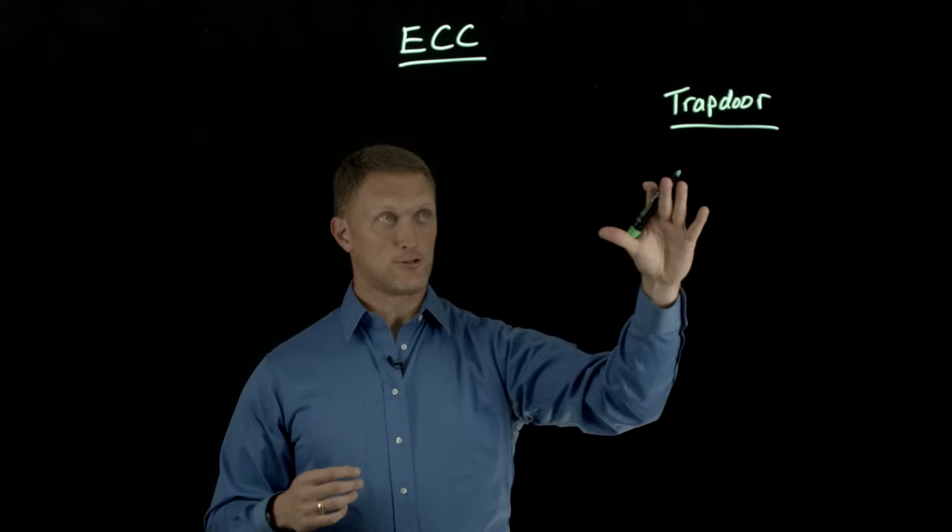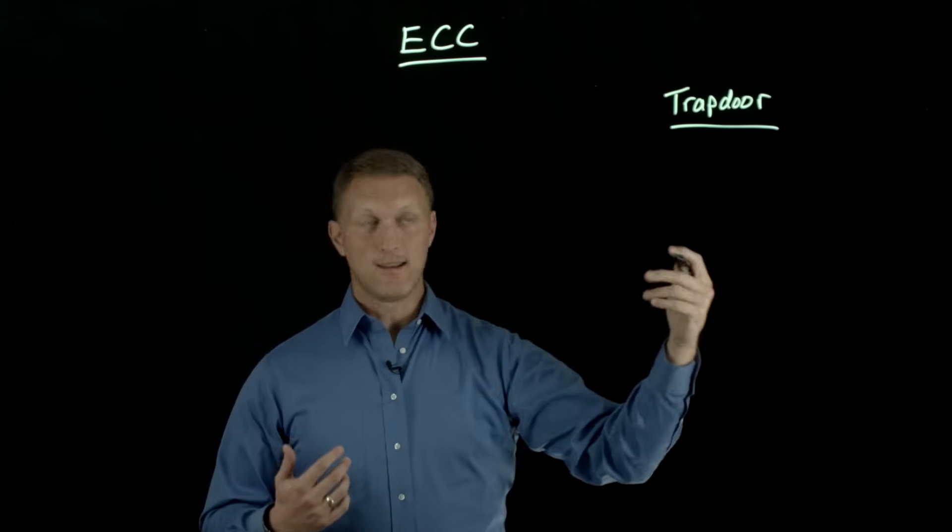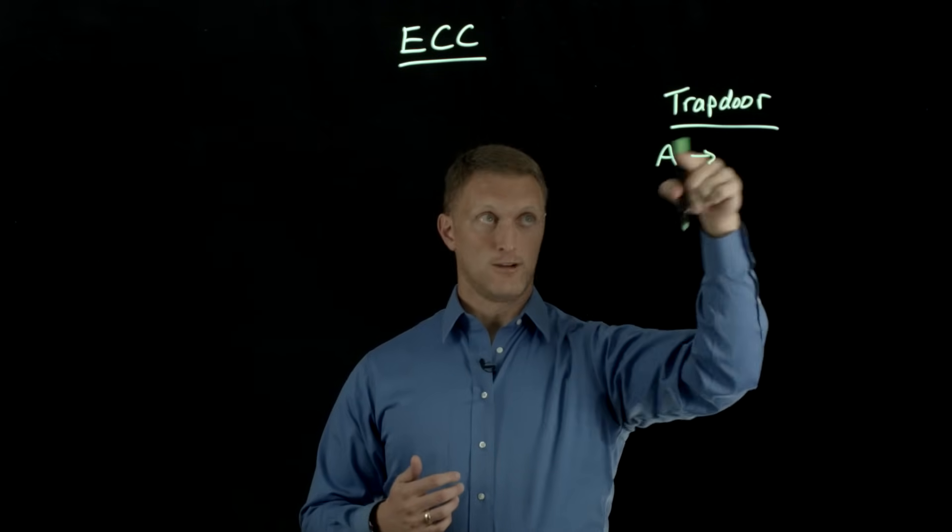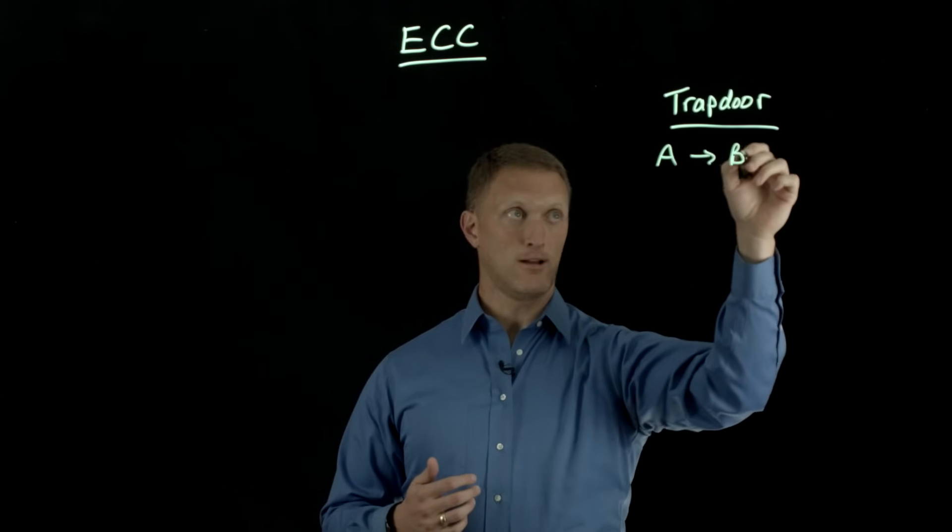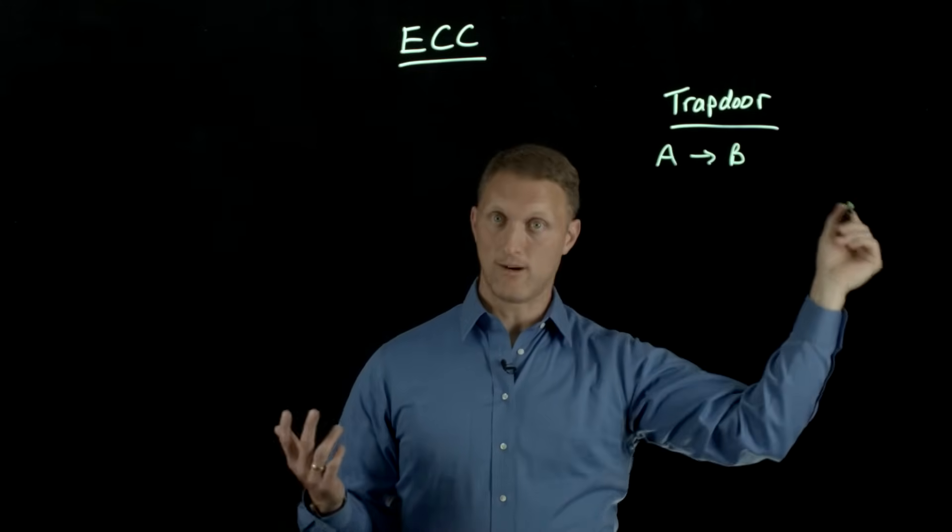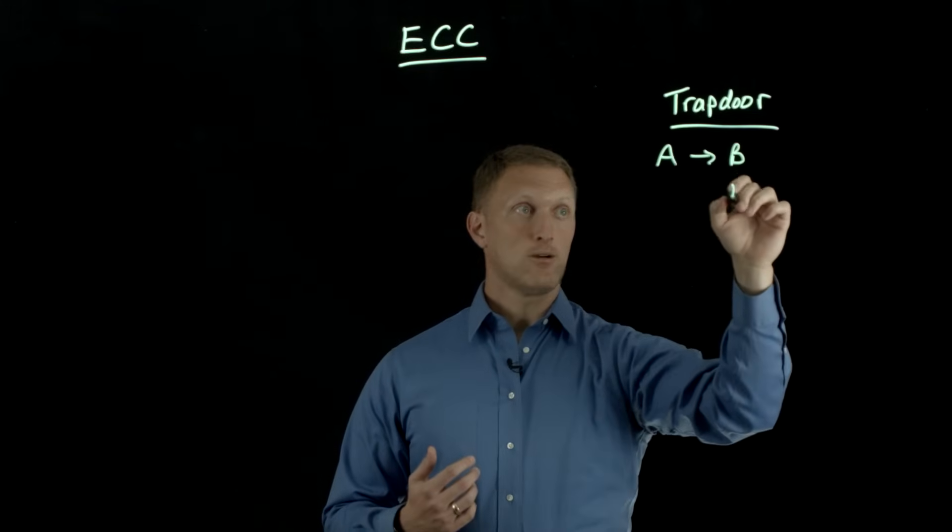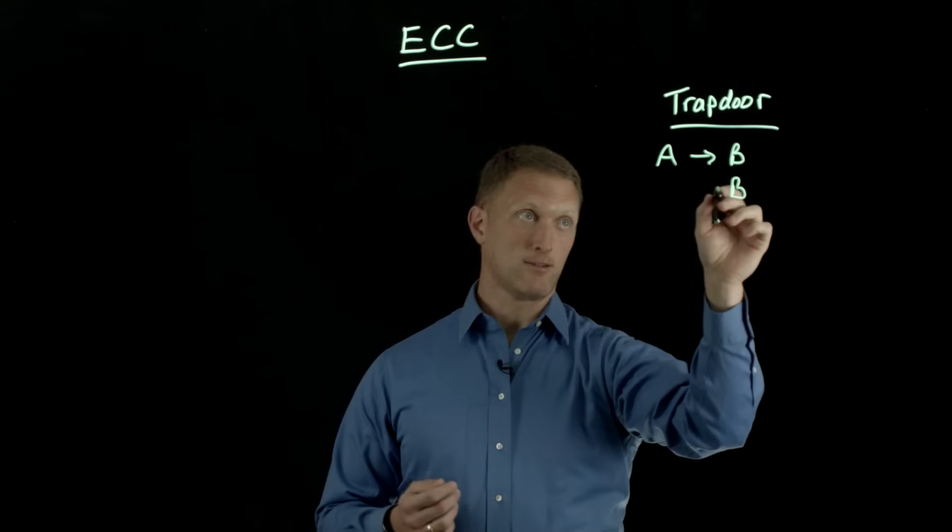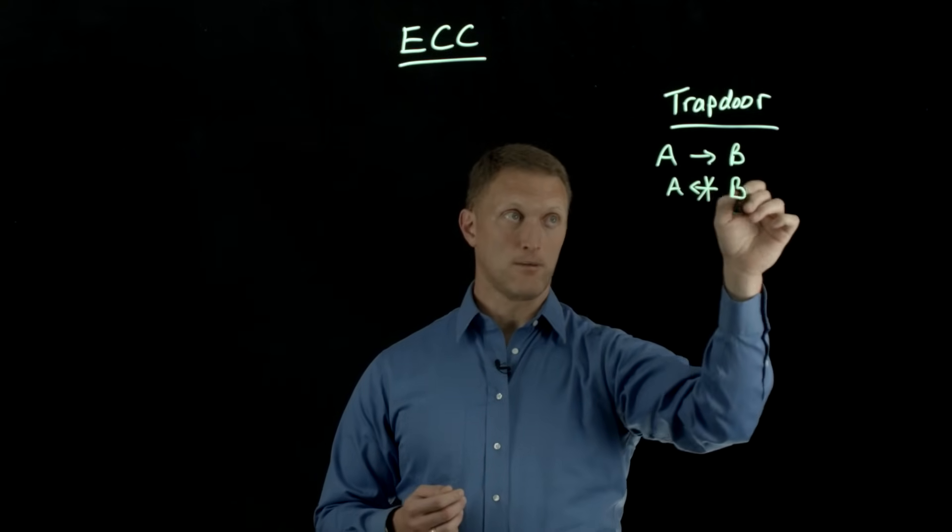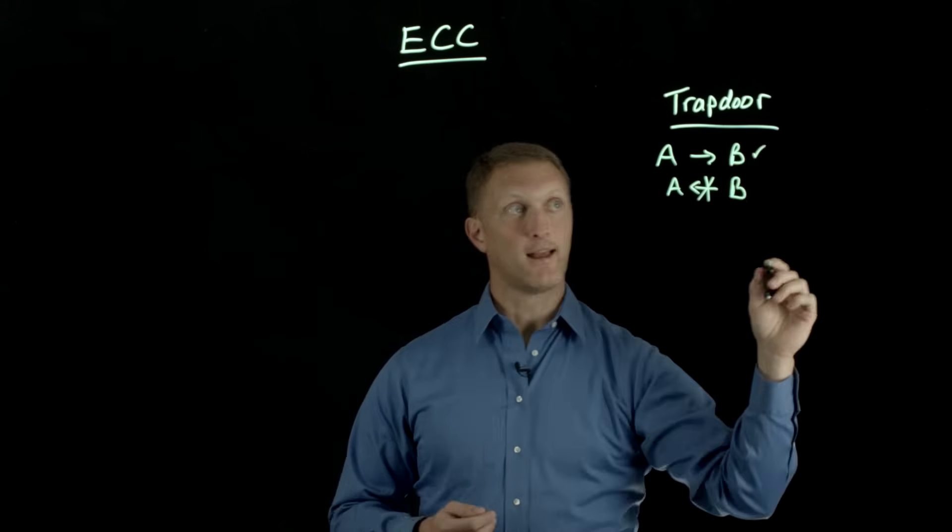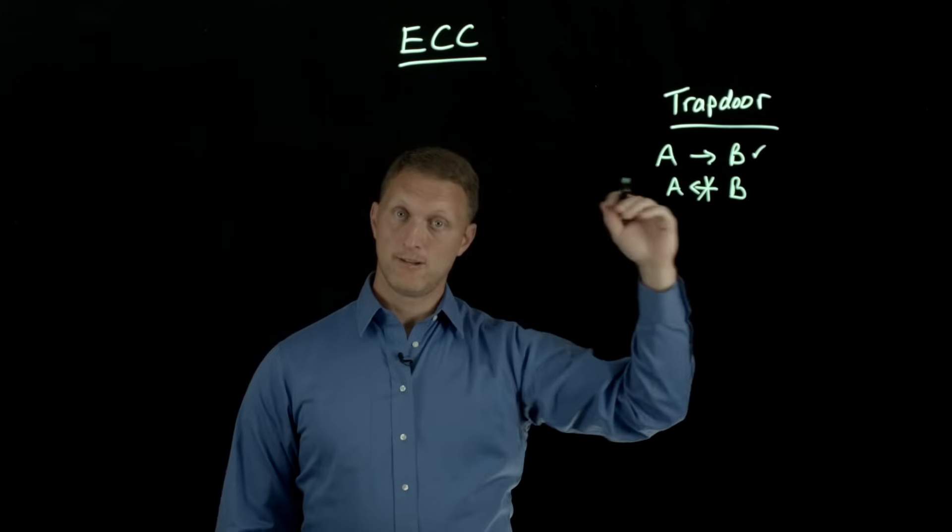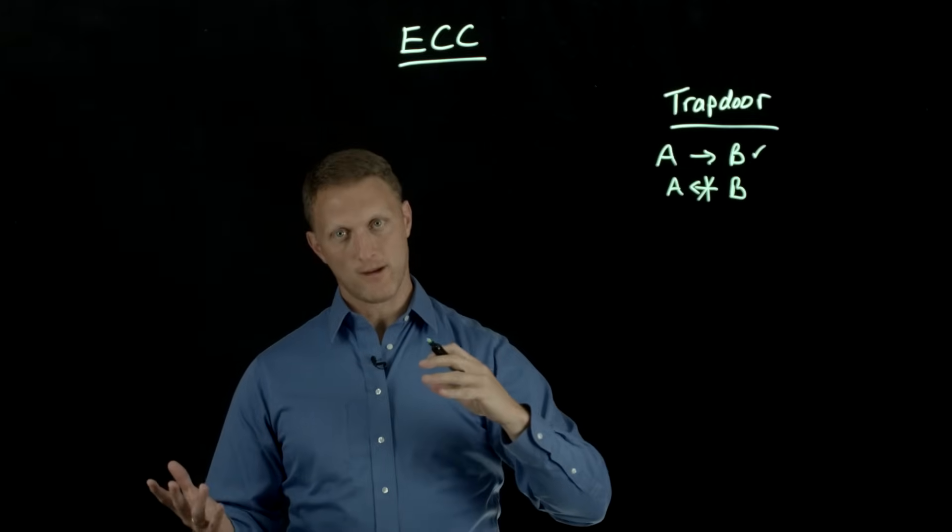This is the math function that kind of underpins the public key crypto systems. In a trapdoor function, the basics behind it is that you can take a given value, I'll call it A, and use the trapdoor function to get to another value, I'll call it B. Going one way, you can do that very, very easily. But then if you start with the other value, say start with B, and then you want to get back to A, then it's very difficult to do that. So trapdoor function, it's very easy to go one direction, it's very difficult to go the other direction.